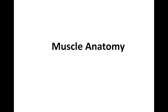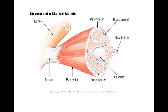Muscle anatomy — we now move to identifying structural components of muscles. Muscles are made up of bundles of structural units. Bundles of muscle fibers make up a fascicle, and bundles of fascicles make up the muscle. The muscle itself is attached to bone by way of tendons. When the muscle contracts, it pulls on the bone causing the movement. Muscle fibers are surrounded by connective tissue known as endomysium. Fascicles are surrounded by perimysium, and the muscle is surrounded by epimysium.